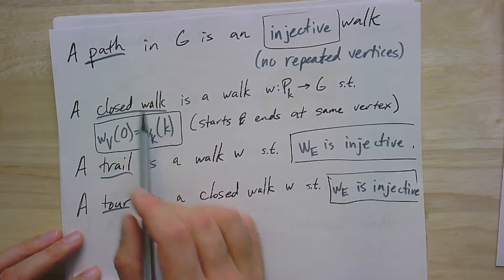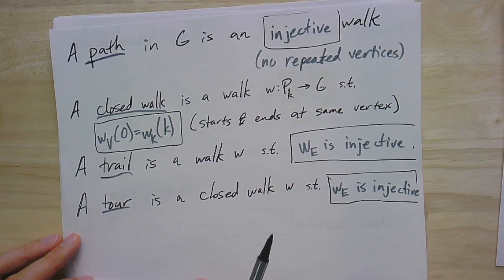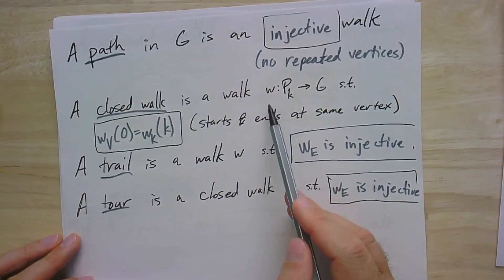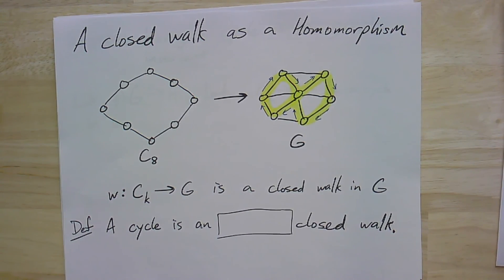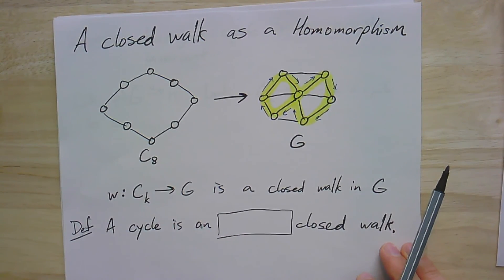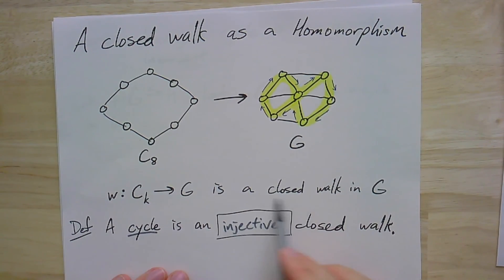So again, these are standard concepts in graph theory, and you should try to get comfortable understanding them in two completely different ways. One being like paths as sequences of vertices where we don't repeat any. And all of these can be thought of as sequences of vertices connected by edges. But you should also try to understand them in terms of being homomorphisms from a path into the graph. Now, closed walks actually are kind of a special case, because it might make more sense to think of the closed walk as a homomorphism from the cycle into the graph. Because the cycle already has this property that begins and ends at the same vertex once you start going around.